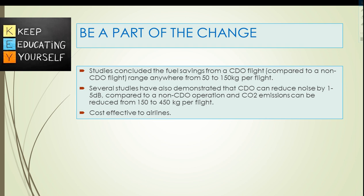Studies concluded that fuel savings from a CDO flight compared to a non-CDO flight range from 50 to 150 kilograms per flight. CDO can reduce noise by 1 to 5 decibels compared to a non-CDO operation, and CO2 emissions can be reduced by 150 to 450 kilograms per flight. An airline operating a fleet of only 20 Airbus A320 or Boeing 737 aircraft flying six flights a day with CDO will result in more than 2 million kilograms (7 lakh gallons) of fuel saving per year.